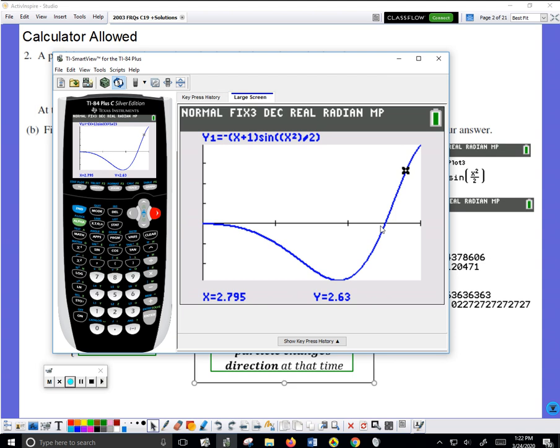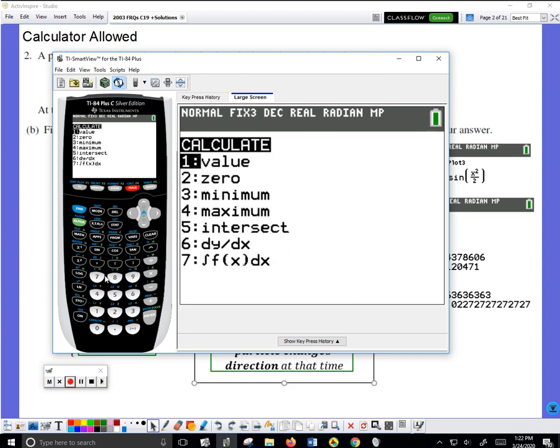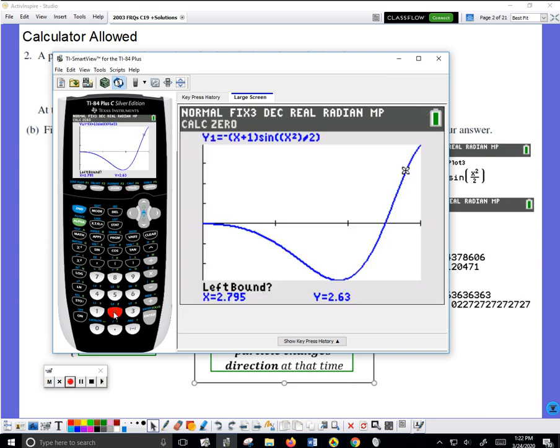I find this point by doing 2nd, hit the trace key, choose zero. You need a left bound. This is 1, 2. So I'm going to type 2, or you can use the cursor.